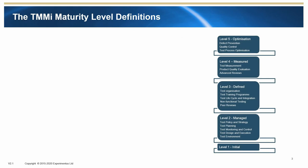The TMMI Maturity Level Definitions. Maturity Level 1 is Initial. This is automatically achieved and describes an organisation where testing is carried out using chaotic, undefined processes. At this level, testing is often seen as merely a debugging process.